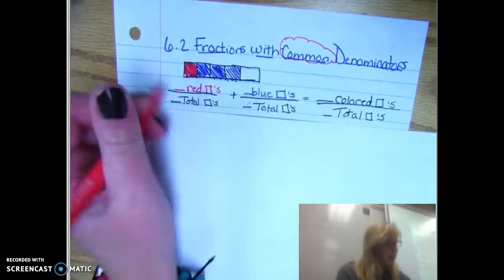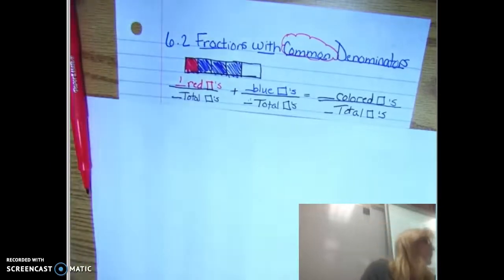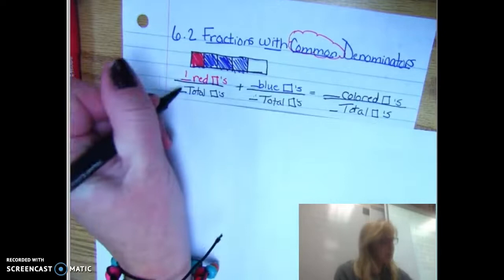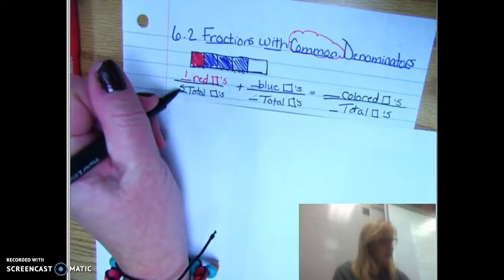So the red is simply one out of, let me grab a black pen, it's simply one fifth. One red square out of a total of five squares.